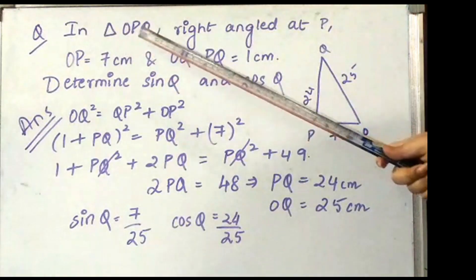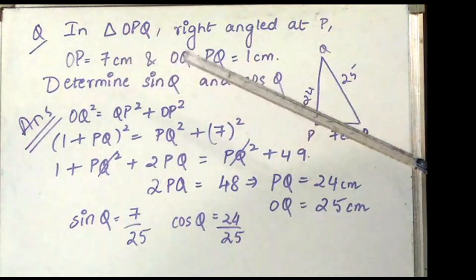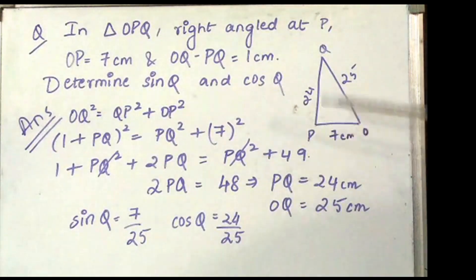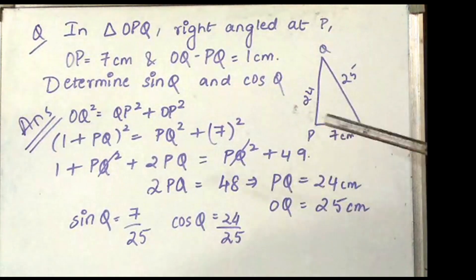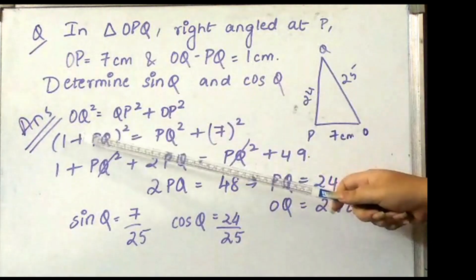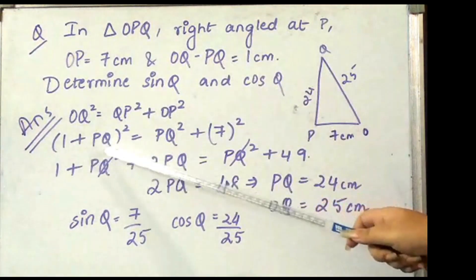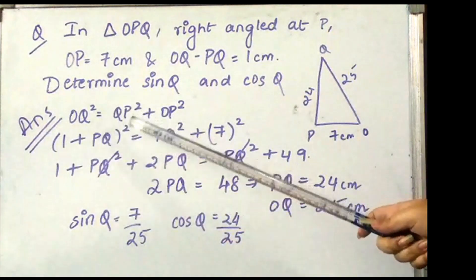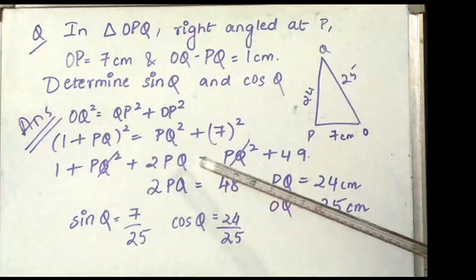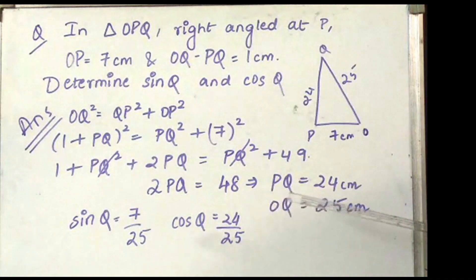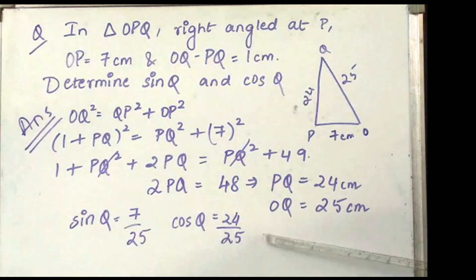The next question is: in triangle OPQ right angled at P, OP is equal to 7 centimetres and OQ minus PQ is 1 centimetre. Determine sin Q and cos Q. By Pythagoras theorem, OQ² = PQ² + OP². Since OQ minus PQ equals 1, OQ can be written as 1 plus PQ. Expanding, (1 + PQ)² = 1 + PQ² + 2PQ = PQ² + 49. Cancelling similar terms on both sides, 2PQ = 48, which implies PQ is 24 centimetres and OQ is 25 centimetres. So sin Q is 7 by 25 and cos Q is 24 by 25.